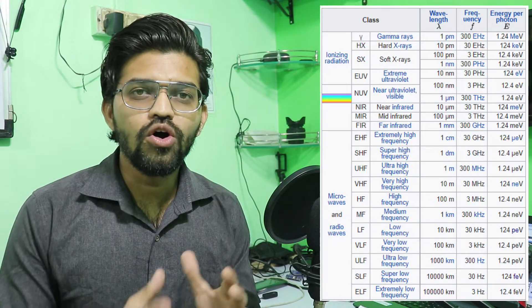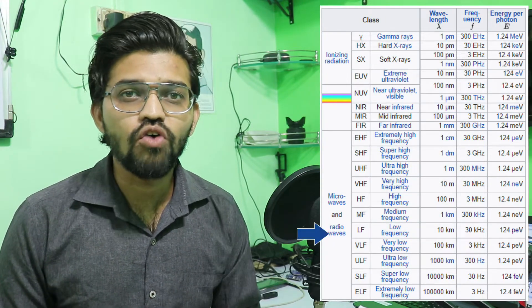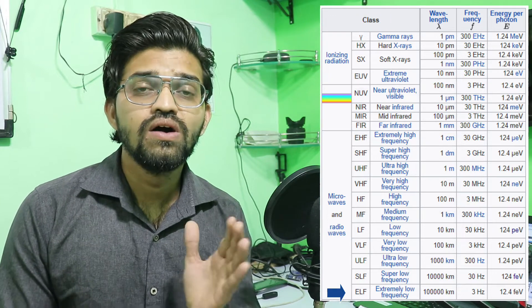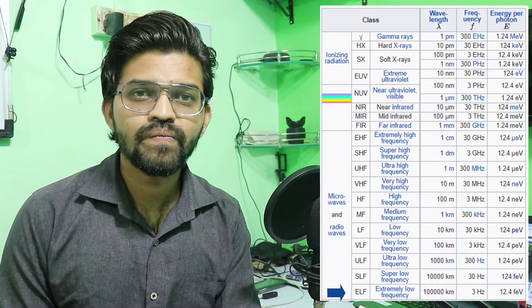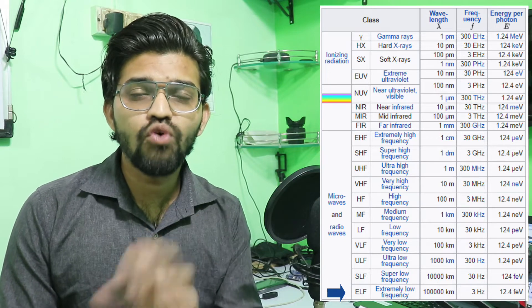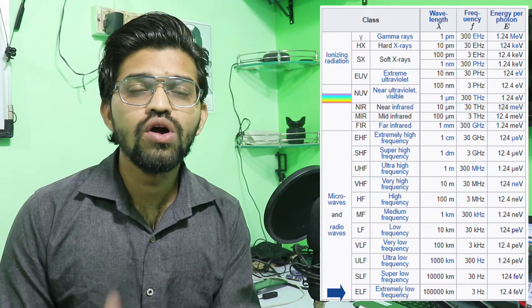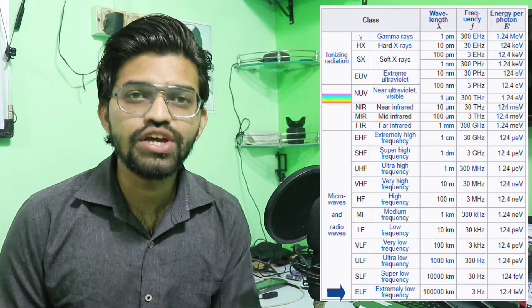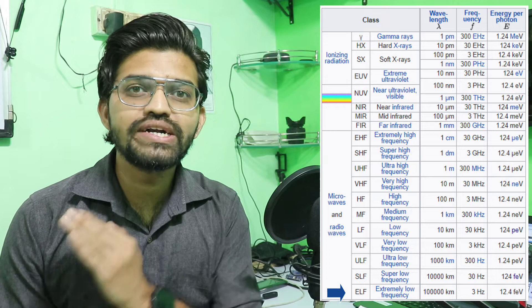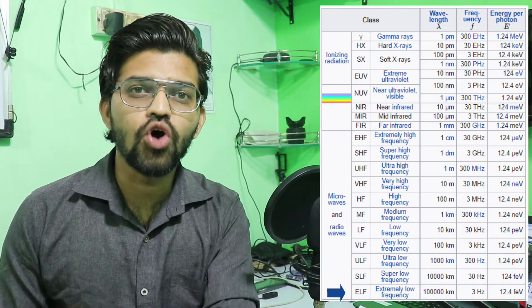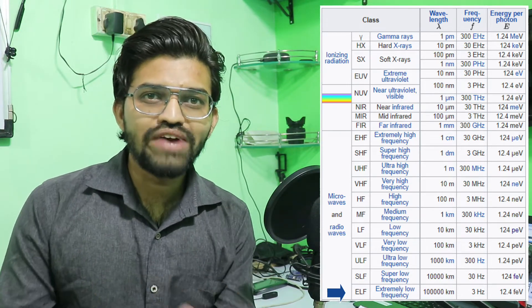Radio waves have different classes. For example, the extremely low frequency (ELF) class has a wavelength of 100,000 kilometers, a frequency of 3 hertz, and the energy per photon is very small — just 12.4 femtoelectron volts, where femto stands for 10 to the power of minus 15. This shows how tiny the energy carried by each photon in this radio wave is.